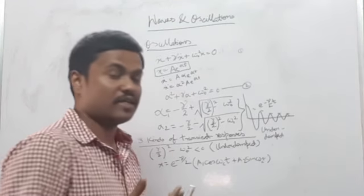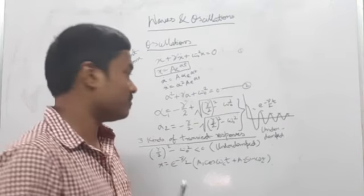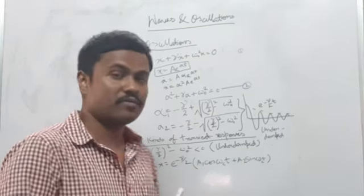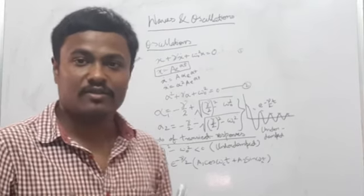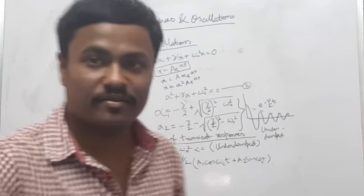So that was it for this video. Now you see that there were actually two other transient responses possible besides underdamped, depending on the term under the square root. I hope you found this useful. Thank you for watching.